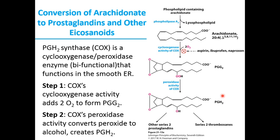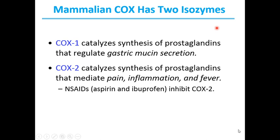Those with 3 double bonds are series 3 prostaglandins. Mammalian cyclooxygenase has 2 isozymes, namely cyclooxygenase 1 and cyclooxygenase 2, or COX-2. These 2 isozymes have different functions but closely similar amino acid sequences, and also have similar reaction mechanisms at both of their catalytic centers. COX-1 catalyzes synthesis of prostaglandins that regulate gastric mucin secretion, whereas COX-2 catalyzes the synthesis of prostaglandins that mediate pain, inflammation, and fever.